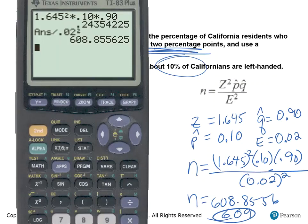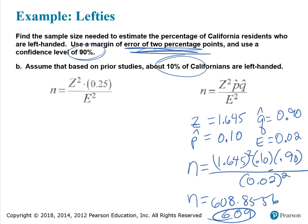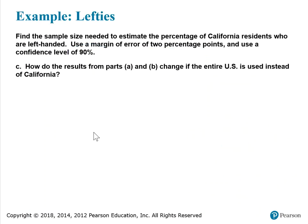A sample of 609 is far fewer than the 1,692 required when there was no estimated value for P-hat. For the follow-up question — how do results change if the entire U.S. is used instead of California — the actual calculations would not change. The only consideration is that the estimate for P-hat comes from Californians, but the numerical calculations themselves remain the same.